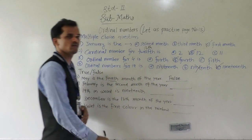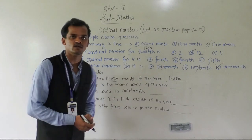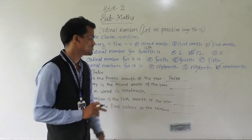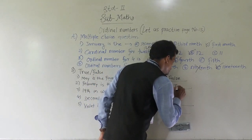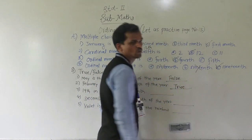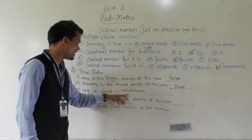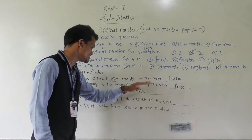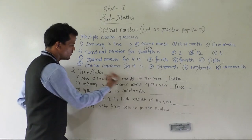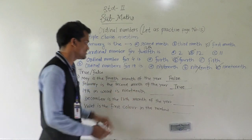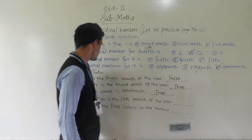Next: February is the 2nd month of the year. January, February — February comes at 2nd position, so this statement is true. Next: 19th in word is N-I-N-E-T-E-E-N-T-H — this spelling is correct, so this is also correct. Write: true.